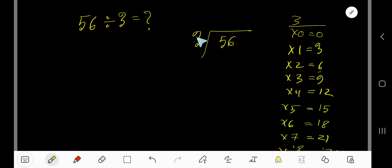56 divided by 3. Here 3 is a divisor, so we need the multiplication table of 3: 3 times 0 is 0, 3 times 1 is 3, 3 times 2 is 6, 3 times 3 is 9, 3 times 4 is 12, 3 times 5 is 15, 3 times 6 is 18. To find out the multiplication table of 3 easily, just start with the previous step: 0 plus 3 is 3, 3 plus 3 is 6, 6 plus 3 is 9, 9 plus 3 is 12, 12 plus 3 is 15, 15 plus 3 is 18.